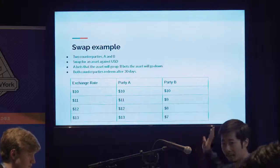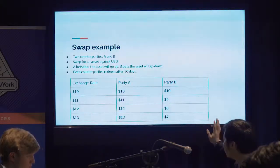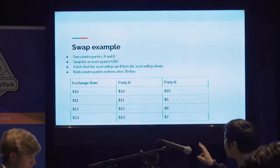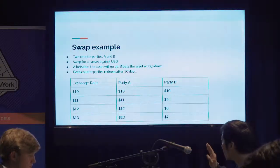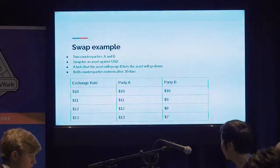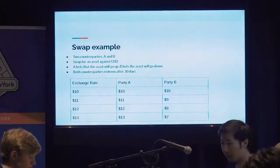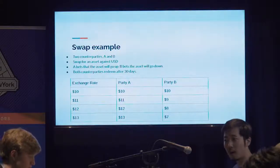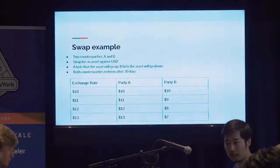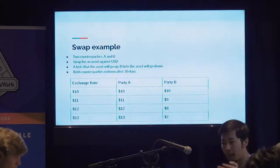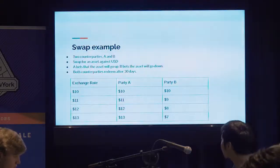A very simple example: you have two parties, A and B. They want to swap a foreign asset against U.S. dollars. If the price of the asset goes up, party A has a long position — as the price goes up, they gain money. Party B has a short position — as the price goes up, they lose money. Fairly simple to understand.